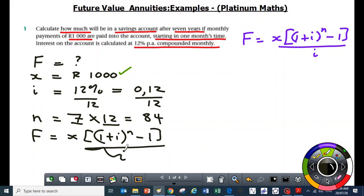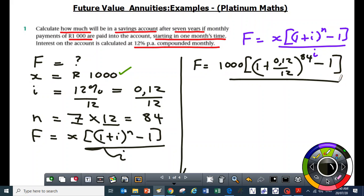If I substitute, I get F equal to x is R1000, 1 plus i, where i is 0.12 over 12, and all that is raised to the power of 84, then we subtract 1 to that answer, all over 0.12 over 12.